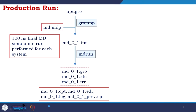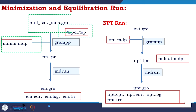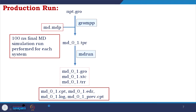With minimization and equilibration run performed — both were 100 picoseconds — we now come to the final run with the npt.gro file. Again we make a conversion to a .tpr file using grompp with the .mdp, .gro, and .top files. The tpr file is used for the MD run — a 100 nanosecond final MD simulation run is performed for each system.